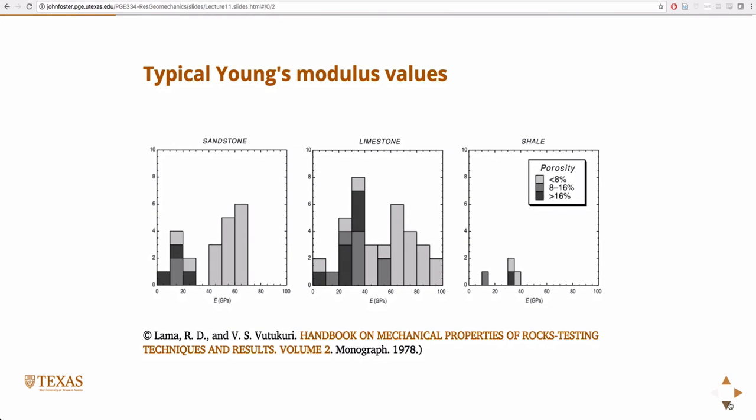Okay, so some typical Young's modulus values for materials that we care about. Rocks, typically in the sort of 60 gigapascal-ish range is a good average for a rock, 60 gigapascals. I guess a little bit lower for shales. There's not as much data here. The colors indicate just the porosity values of these different rocks, so that's sort of as expected. The materials with lower porosity, so the light colors or low porosities, tend to be a little more stiff. Which you kind of expect.